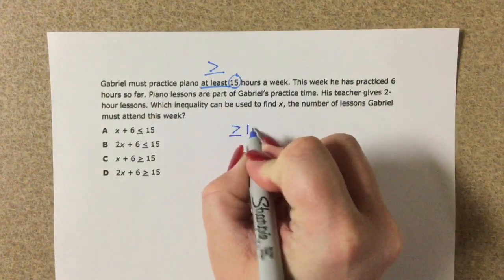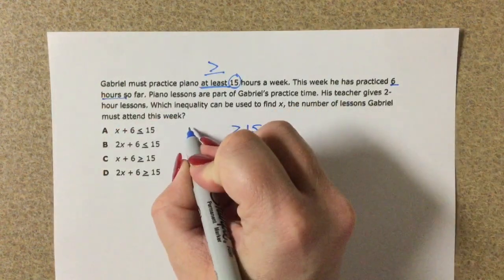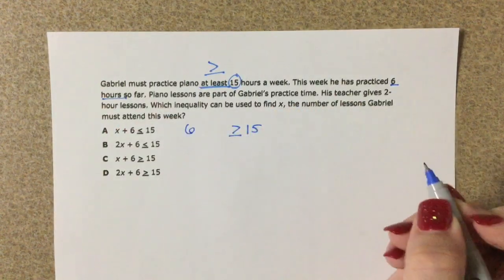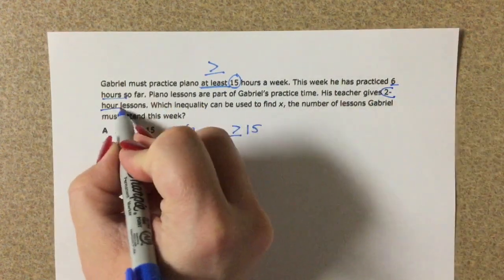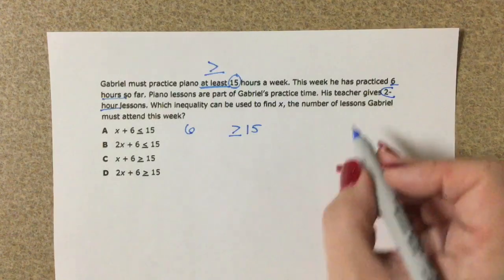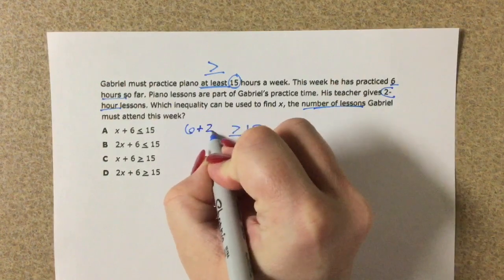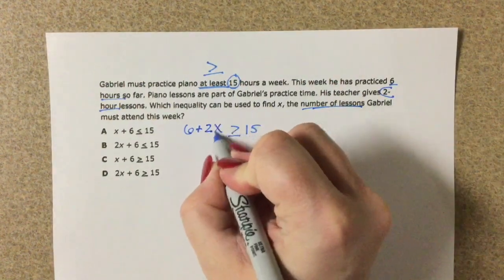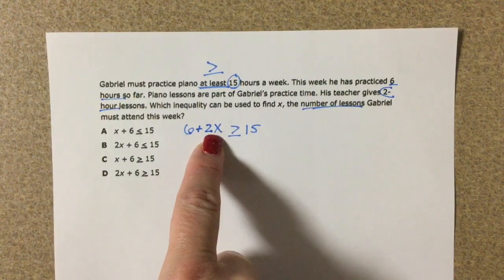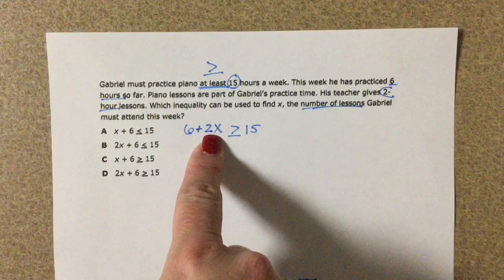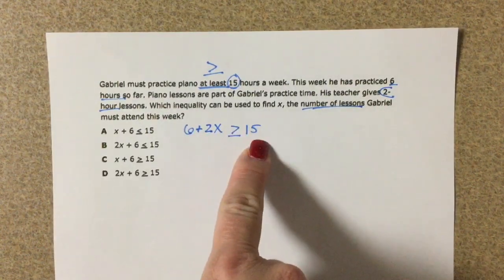So we have greater than or equal to 15. He has practiced 6 hours so far, so we get to count that 6 hours. Piano lessons are part of the practice time and the teacher gives 2-hour lessons. We're trying to find the number of lessons that he has to attend. So each of them are 2 hours and we don't know how many he'll attend, so we just represent that with our variable. So we've done 6 so far and we've got to figure out how many more times 2, and that has to be greater than or equal to 15.